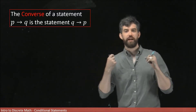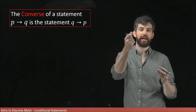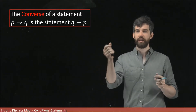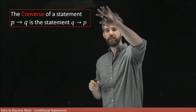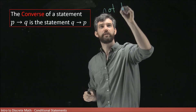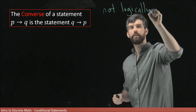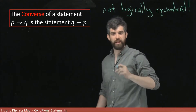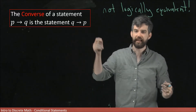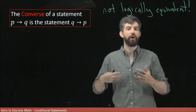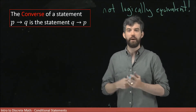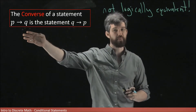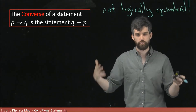The converse of a conditional — the statement P implies Q — is the statement where you reverse the order of P and Q: you take Q implies P. The most important thing to note is that this is not logically equivalent. Often people in everyday life confuse this and think that P implies Q and Q implies P are the same thing, but they are not. The truth tables for Q implies P and P implies Q are going to be different.